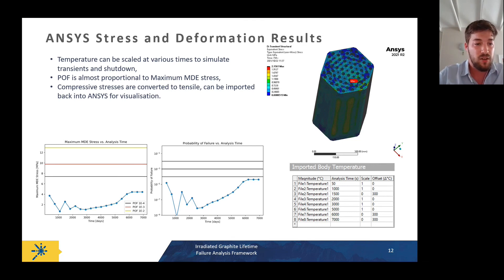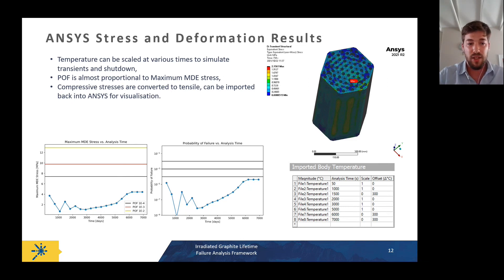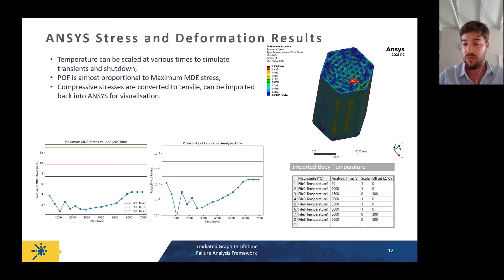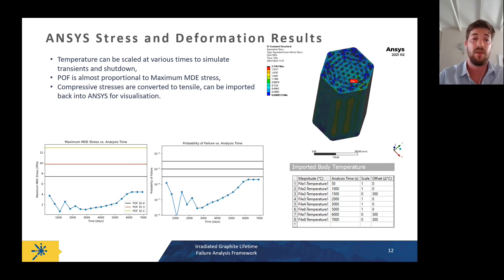One complexity is that the tensile strength of graphite is significantly lower than its compressive strength, and tensile stress is most likely to cause failure. To compare different datasets correctly, compressive stresses must be converted to equivalent tensile stresses for adequate treatment in the probability-of-failure code, which is one reason all stress data must be exported to a Python file.